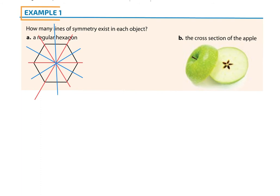This is also called point symmetry. You'll notice that all of your lines of symmetry cross at one point, and that point is equidistant from the side or vertex it went through and the other side or vertex. When you have that, you have point symmetry — all lines of symmetry intersect and are equidistant from every point.